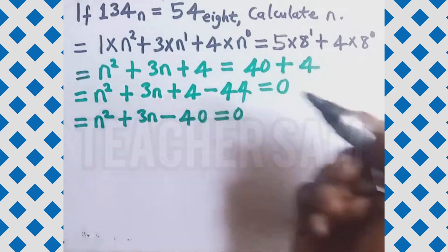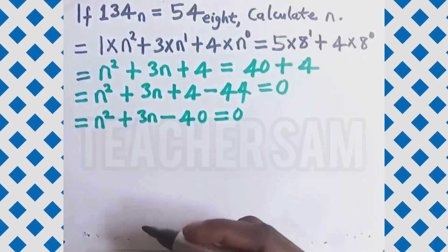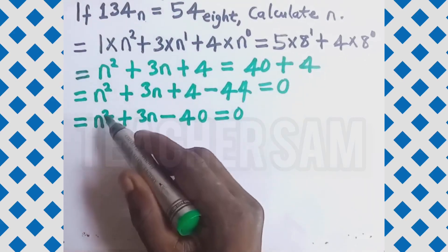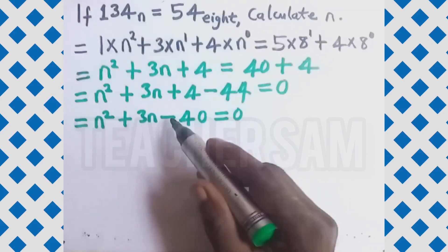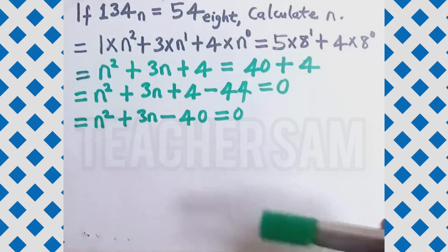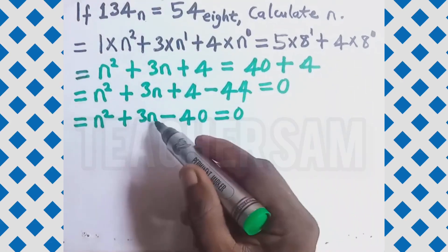This is a quadratic equation. We factorize it using the factorization method. We multiply the first term n squared by the last term minus 40, giving minus 40n squared. We need two numbers that multiply to give minus 40 and add to give plus 3n. Those two factors are 8 and minus 5. So we replace plus 3n with plus 8n minus 5n.